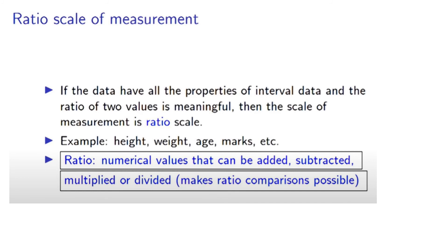The ratio scale of measurement applies when data have all the properties of interval data and the ratio of two values is meaningful — for example, height, weight, age, and marks. Numerical values can be added, subtracted, multiplied, or divided, and ratio comparisons are possible.